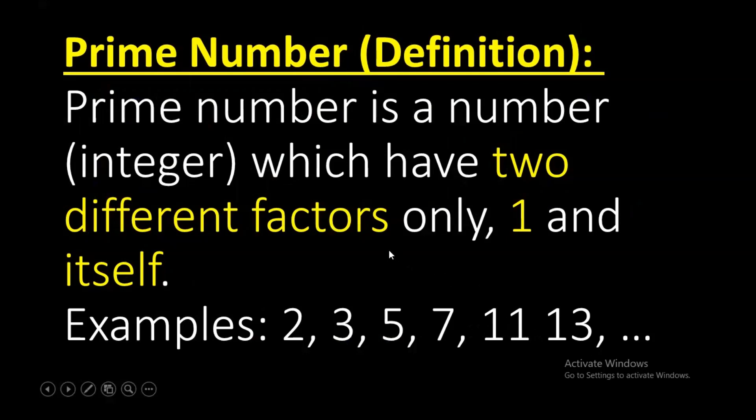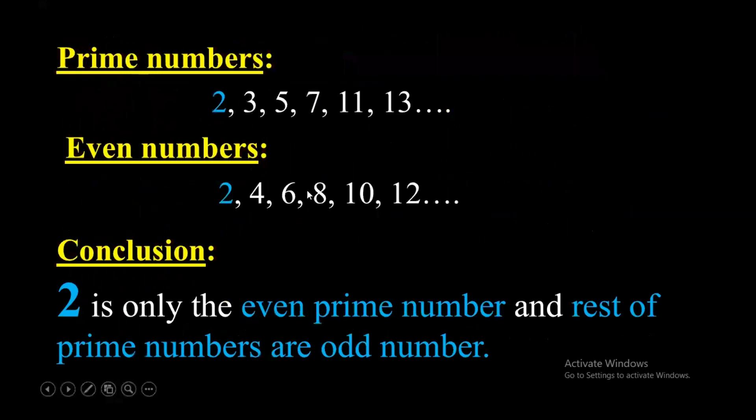If we combine these two definitions, the list of the prime numbers are 2, 3, 5, 7, 11, 13 and so on. And the list of the even numbers are 2, 4, 6, 8, 10 and 12.